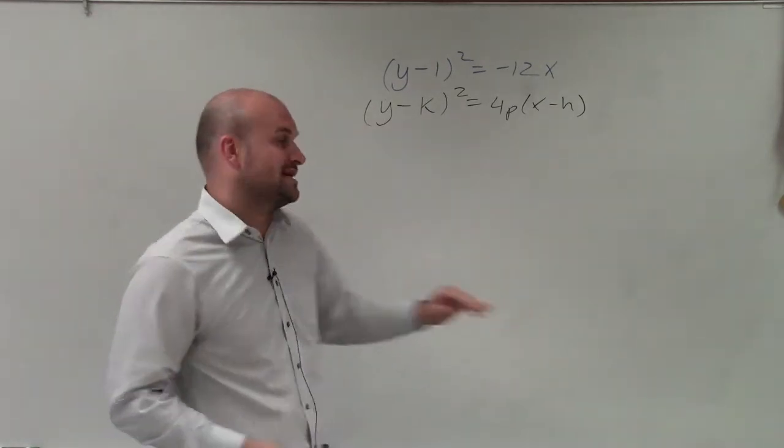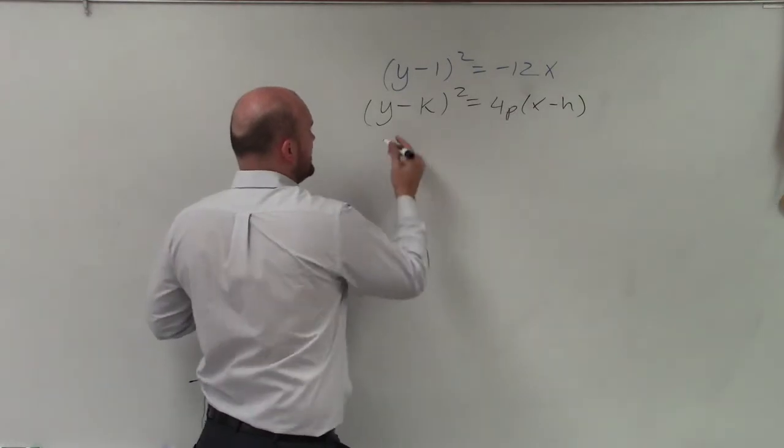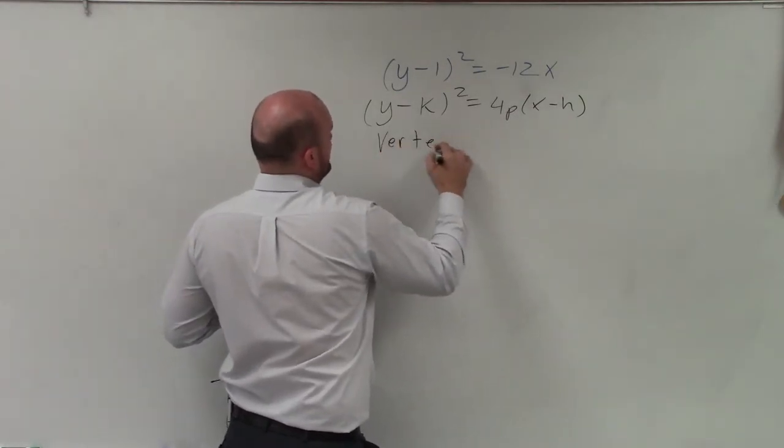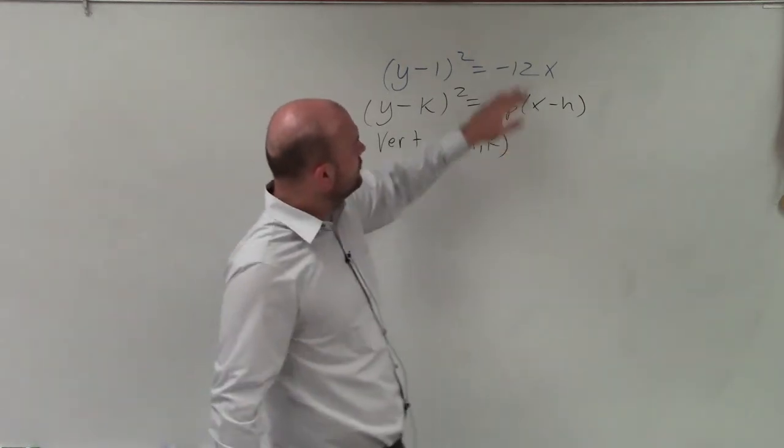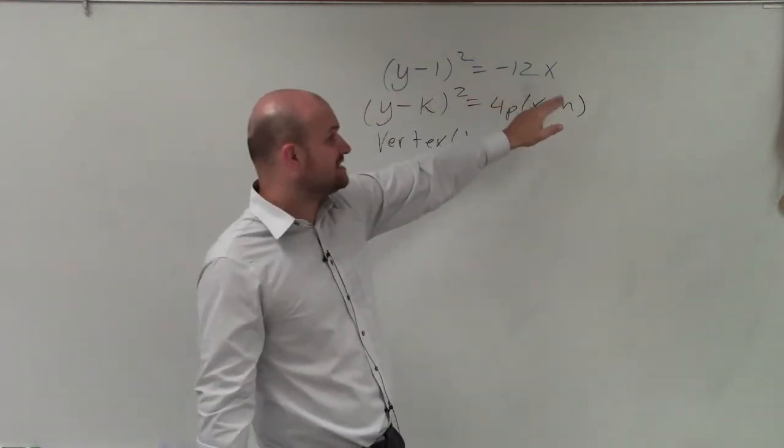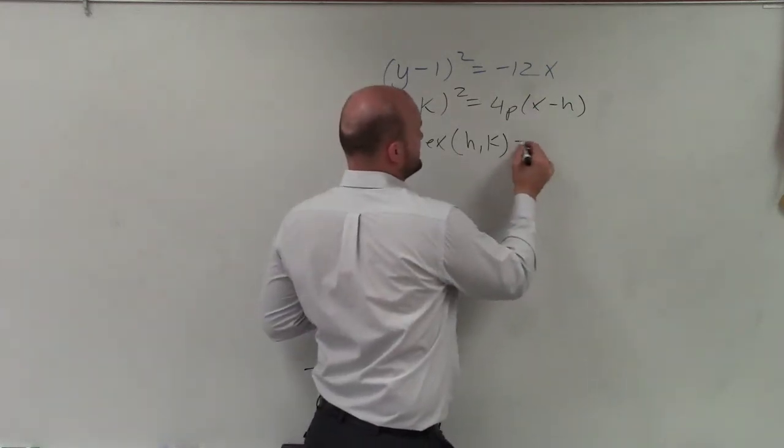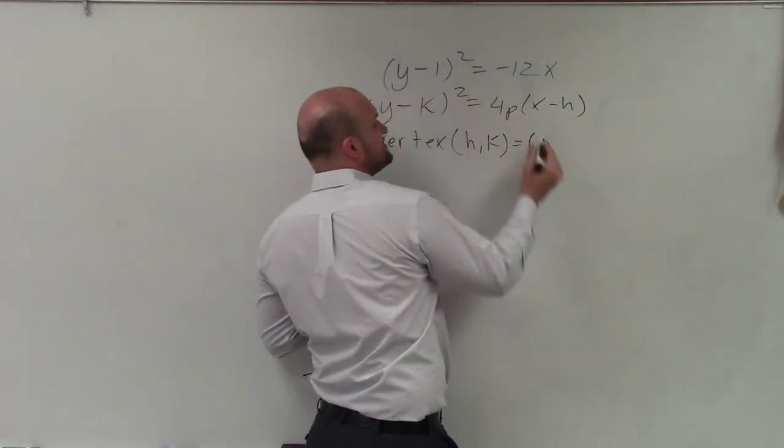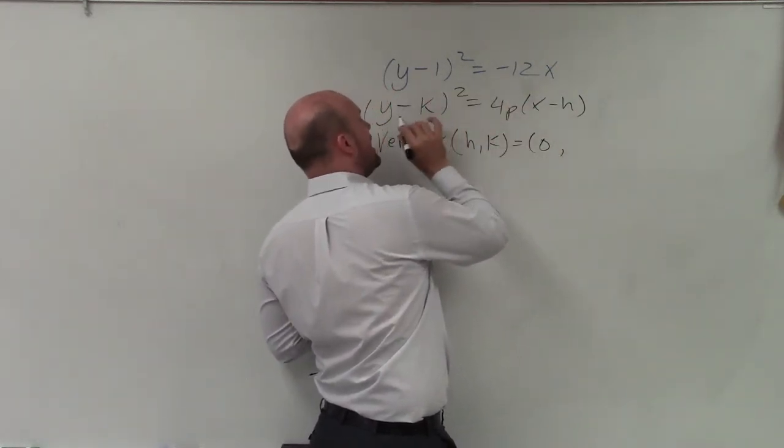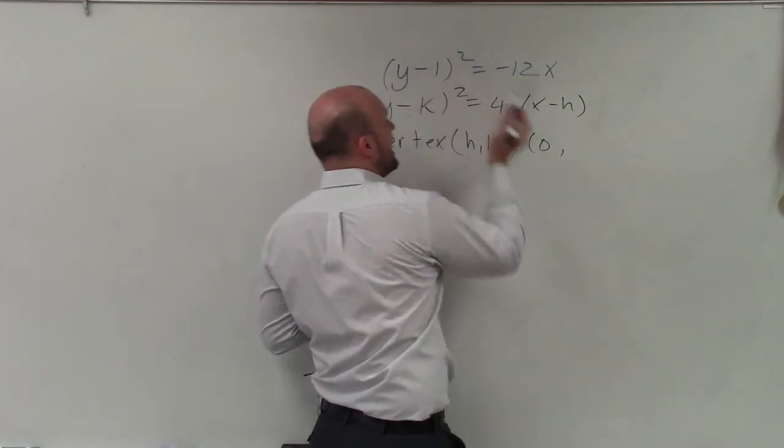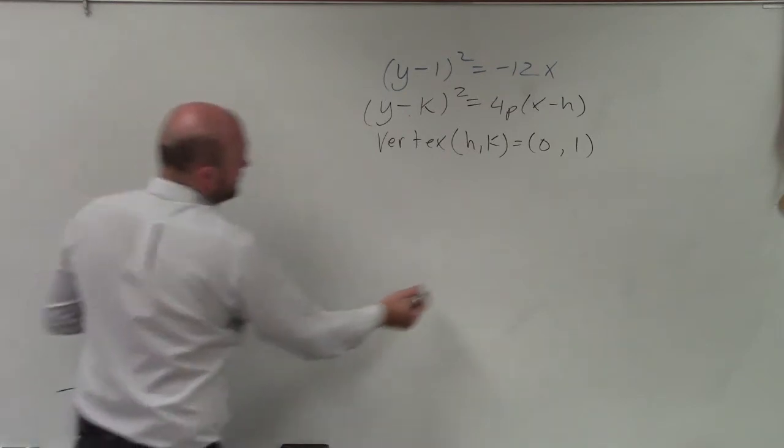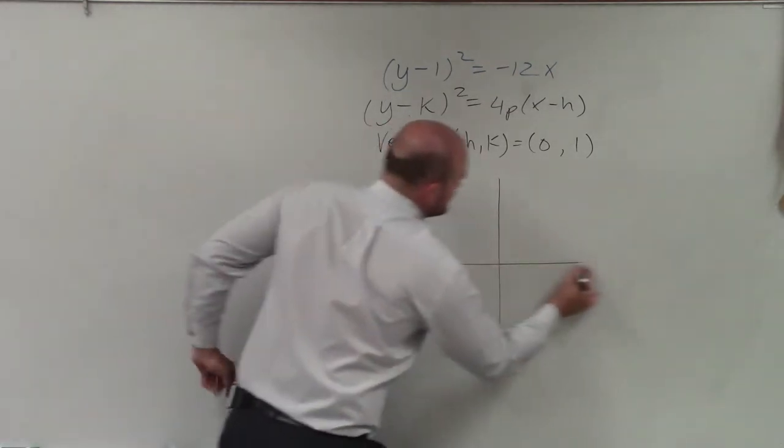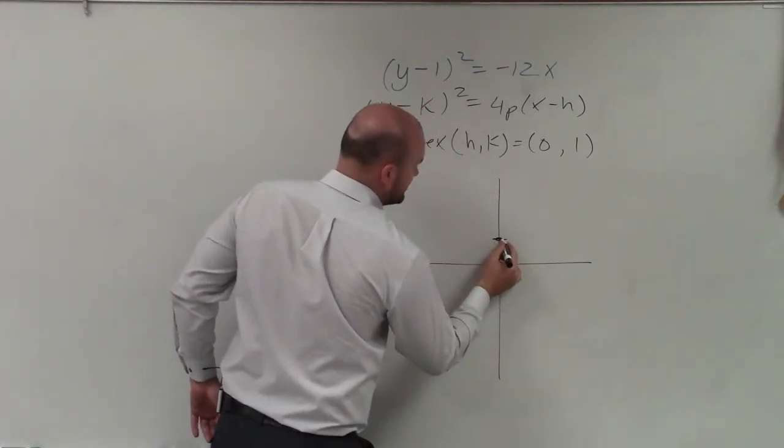Since we know we have a horizontal axis of symmetry with y squared, the next thing is to identify our vertex. What's nice about this equation is that the vertex is in the form of h comma k. Looking here, we see that I'm not subtracting anything by my x, so my vertex is actually 0 comma opposite of negative 1, which would be positive 1. So to graph my equation, I simply say, alright, 0, 1. So there's my vertex.